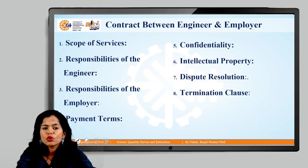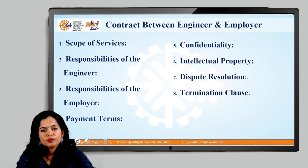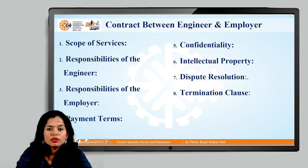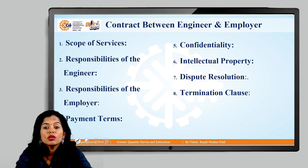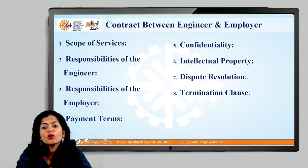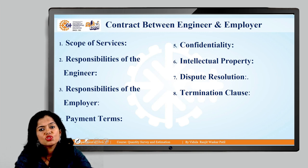Next, we will see between whom this contract happens. This contract generally happens between the engineer and the employer, that is the owner. In the engineer-and-owner contract, the scope of service of the engineer has to be mentioned, the responsibility of the engineers has to be mentioned, the responsibility of the employer — such as when he will pay or what facilities he will provide to the engineer — payment terms, confidentiality, intellectual property, dispute resolution, and the termination clause, which states how this contract will come to an end.